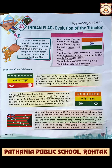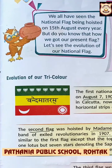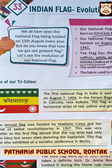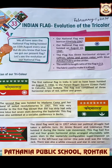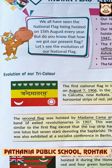Now the evolution of the Tri-Color — evolution meaning the gradual growth of anything, a process of growth. The first National Flag of India came into existence in 1906 and was first hoisted on August 7, 1906. It was also a tri-colour, having green, yellow, and red colors.